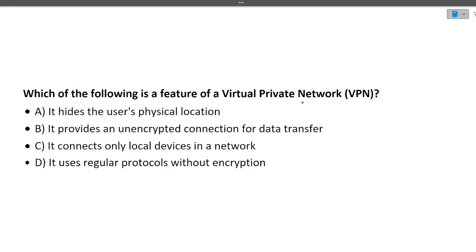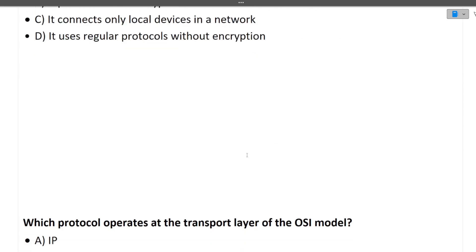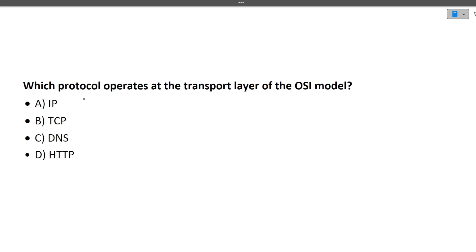The next question is: which of the following is a feature of VPN? It hides the user's physical location — this is correct. 'It provides an unencrypted connection' — no. 'Connects only local devices' — no. 'Uses a regular protocol without encryption' — no. So the correct answer is: a VPN hides the user's physical location.